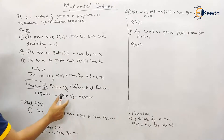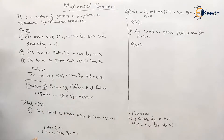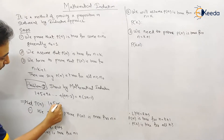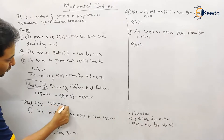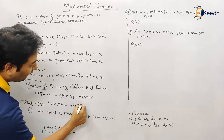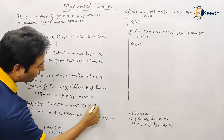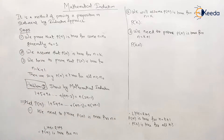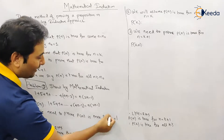First, let P(n) be the given statement: 1 + 5 + 9 + ... + (4n − 3) = n(2n − 1). Next, we need to prove that P(n) is true.